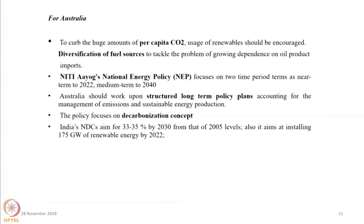India has a national energy policy that intends to provide affordable energy with good energy security. Australia should have a structured long-term policy plan like India. India's NDC aims to reduce 33 to 35 percent of CO2 in the near future, and Australia should take care of similar plans. For example, India is targeting the installation of 175 gigawatts of renewable energy by 2022, and Australia should also advance with renewable energy at a faster pace.